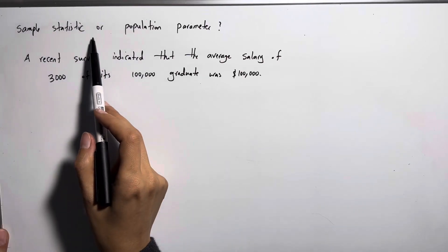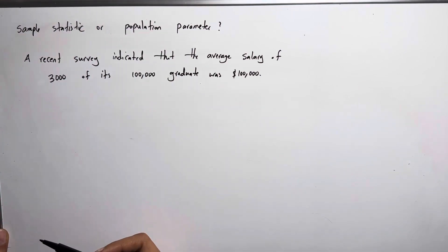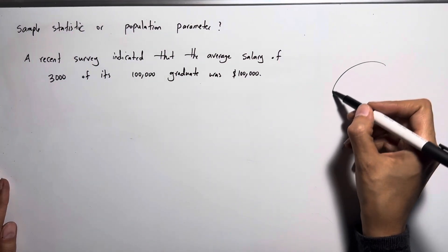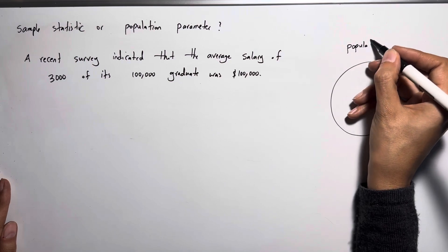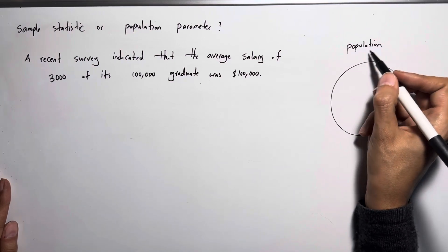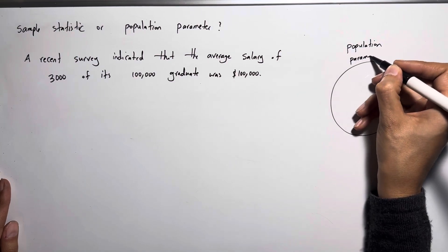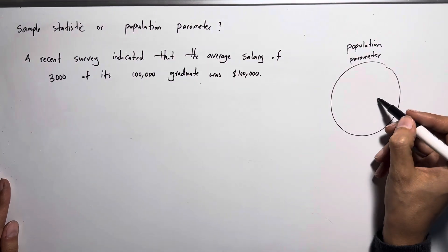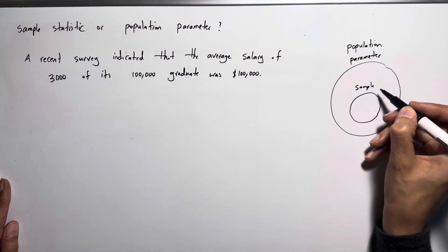This question says: identify if it is a sample statistic or a population parameter. Remember that if you have a population, the larger set, any numerical characteristic for that population is a population parameter. But if you're working with a sample, you're going to have a sample statistic.